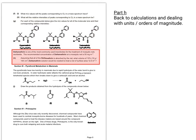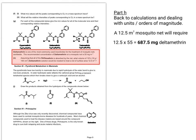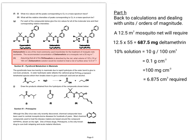Looking at part H, we're moving back to calculations and dealing with units in orders of magnitude. The recommended concentration of deltamethrin on a mosquito net is 55 milligrams per metre squared. Starting with working out how many milligrams of deltamethrin you'll need overall: 12.5 m² for the area of a mosquito net at 55 mg/m² gives the total. If using a 10% solution — that's 10 grams per 100 cm³, or 0.1 g/cm³, which is 100 mg/cm³ — that would mean 6.875 cm³ required.